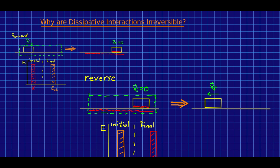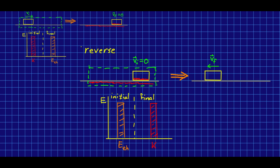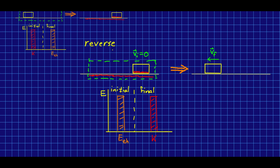So that's the forward process. Why is it that the reverse process never happens? I think you can agree with me that we never see this happen. We do not have a warm block and a warm floor suddenly spontaneously cool down, and the block starts moving across the floor, so that we convert thermal energy into kinetic energy. That simply does not happen. But why?